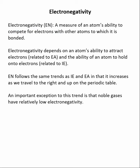Electronegativity depends on the ability of an atom to attract electrons, so it's going to be directly related to electron affinity — one of the periodic trends we've previously discussed. It's also related to the ability of an atom to hold on to electrons, which is related to ionization energy, another periodic trend we have discussed.